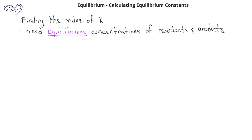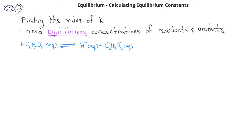For example, if we're looking at the solvation equilibrium of acetic acid in water, which produces hydrogen ions and acetate ions, as long as we're given the equilibrium concentrations of acetic acid, the hydrogen ion, and the acetate ion, we can plug those equilibrium values into the equilibrium constant expression to determine a numerical value for the equilibrium constant for this system.